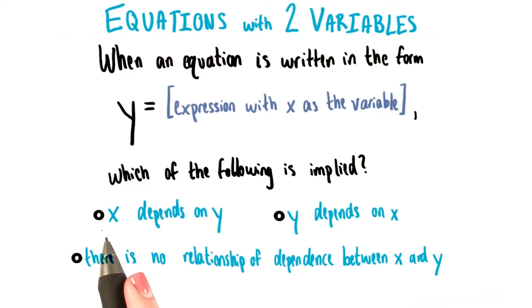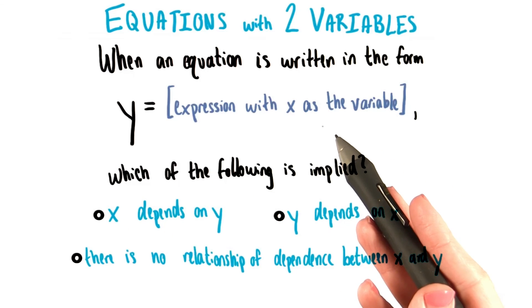In an equation like this, does x depend on y? Does y depend on x? Or is there no relationship of dependence between x and y? In other words, does one of these two quantities help determine the value of the other one?